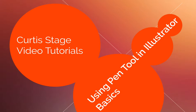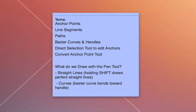Welcome to Curtis Stage Video Tutorials. Today we're going to talk about Adobe Illustrator and the pen tool — a beginning tutorial covering the basics. Terms we need to learn: anchor points, line segments, paths, Bezier curves, handles, the direct selection tool, the convert anchor point tool. With the pen tool we can draw straight lines and curves. It's the basic drawing tool in Illustrator for making vector drawings — great for drawing logos.